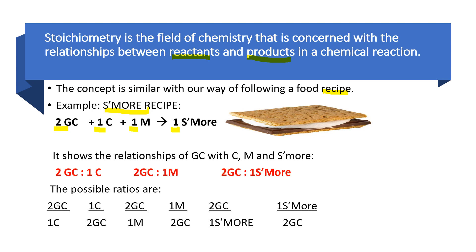The coefficients show the relationships of graham crackers with chocolate, with marshmallow, and with the s'more. Two graham crackers is to one chocolate. Two graham crackers is to one marshmallow. Two graham crackers is to one s'more. The coefficient is the number written in front of the ingredients and the product.